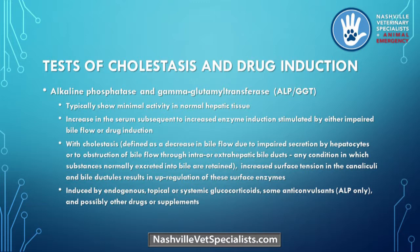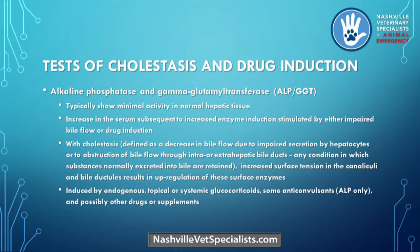Cholestasis is simply a decrease in bile flow due to impaired secretion by hepatocytes or obstruction through the intra- and extra-hepatic bile ducts. It's either not being secreted due to hepatocellular injury or insufficiency, or we're having some form of obstruction. Substances that are normally secreted into bile are retained and increase into the serum. Any condition that increases surface tension in the canaliculi and bile ductules results in upregulation of ALP.